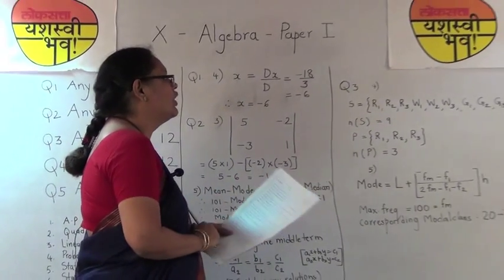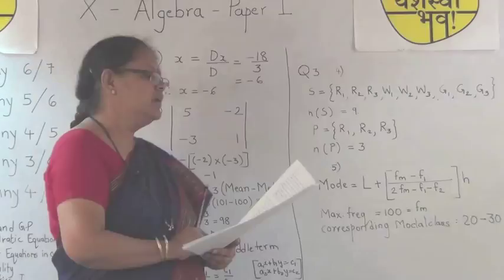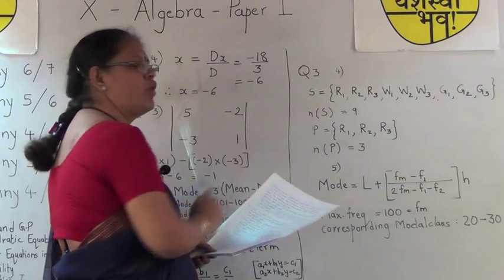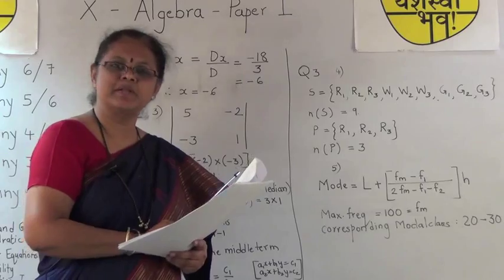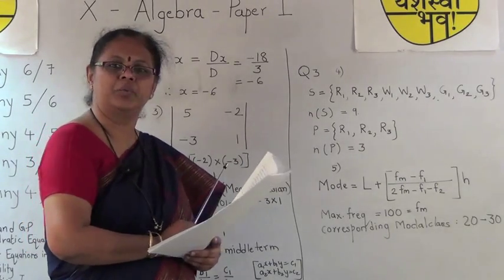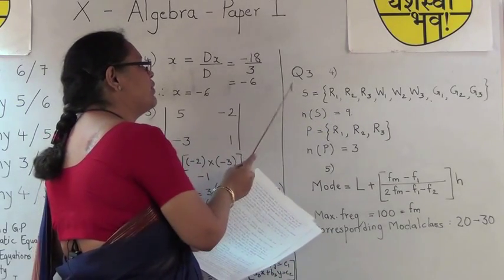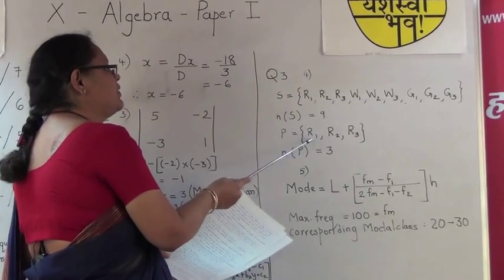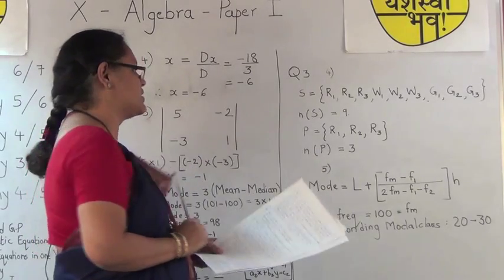Sum number 4 is based on chapter 4, probability. They have asked a question regarding red balls, white balls, and green balls. Accordingly, you have to find the sample points, the sample space, and the points related to events P and Q. Start by writing down the sample points and sample space, then find the number of sample points in event P and Q accordingly, which will give you simple three marks.